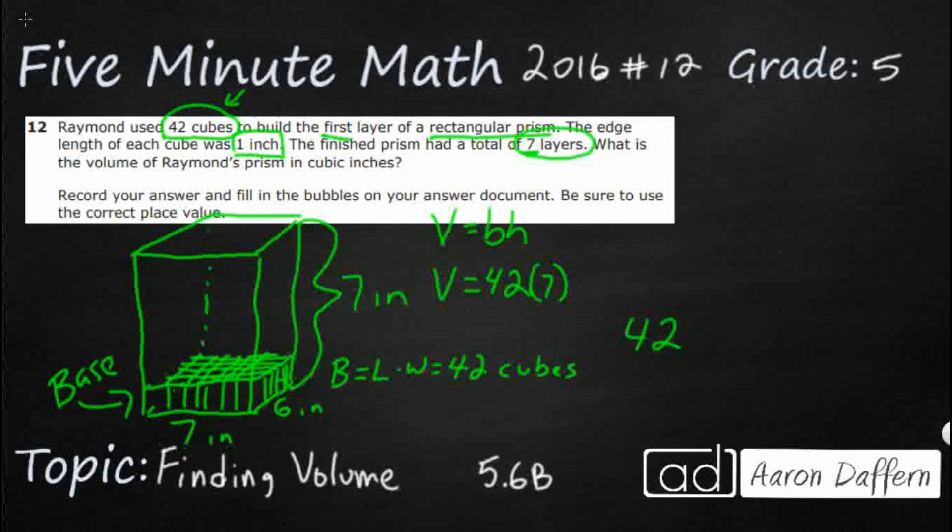Now that we've got it visualized, we just need to multiply 42 times 7. That base times the height, that's going to get us our volume. That's going to be 14, 28, 294. Now there is no multiple choice. So we do have to make sure we bubble this in correctly.